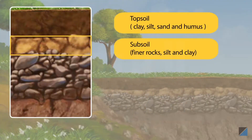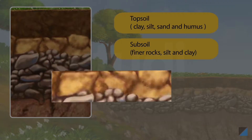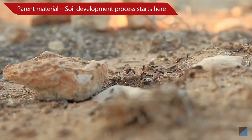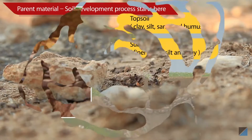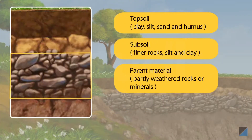The layer below topsoil is subsoil, which is harder and more compact due to the presence of small rock fragments. Next is the layer of loosely arranged rock material known as the parent material. The soil development process begins in this layer. The parent material determines the colour, texture and chemical composition of the soil in an area.